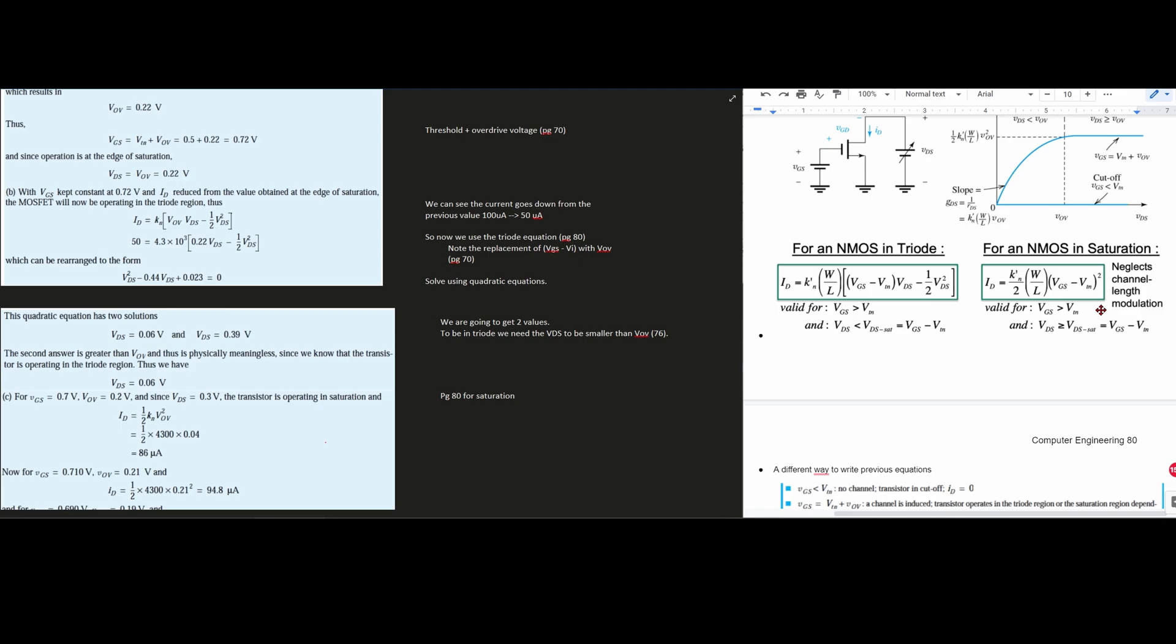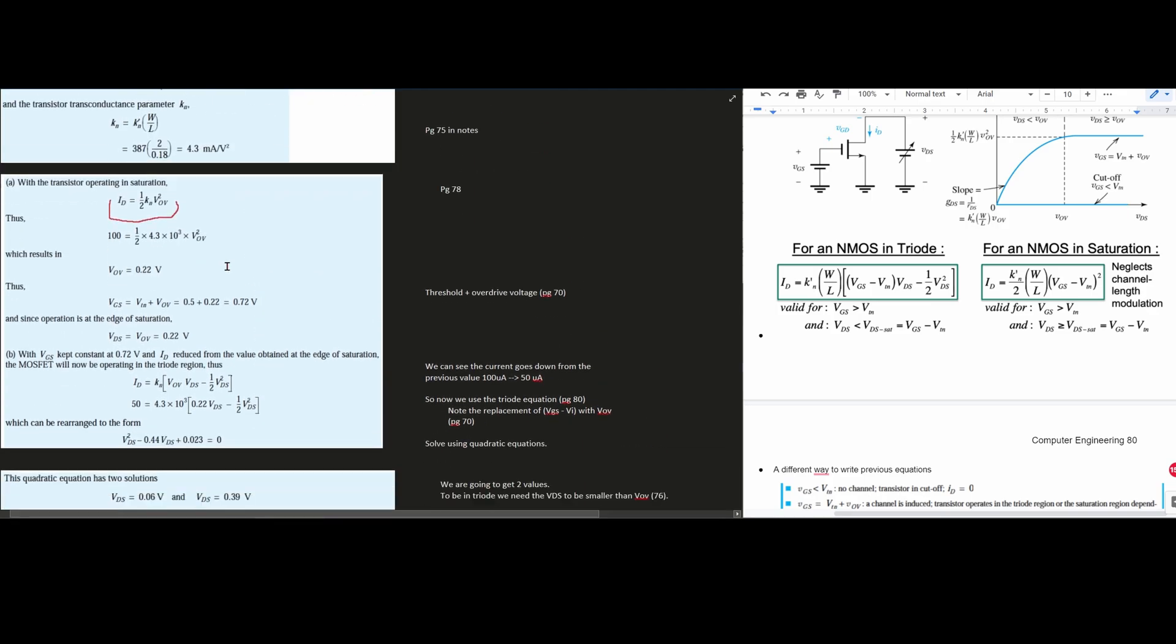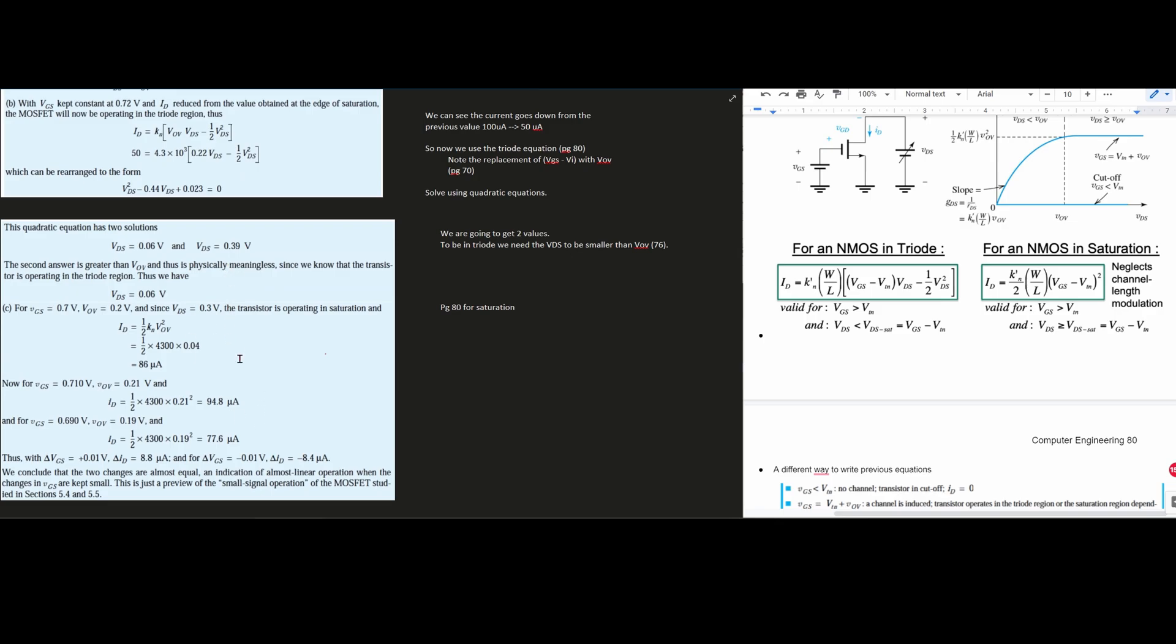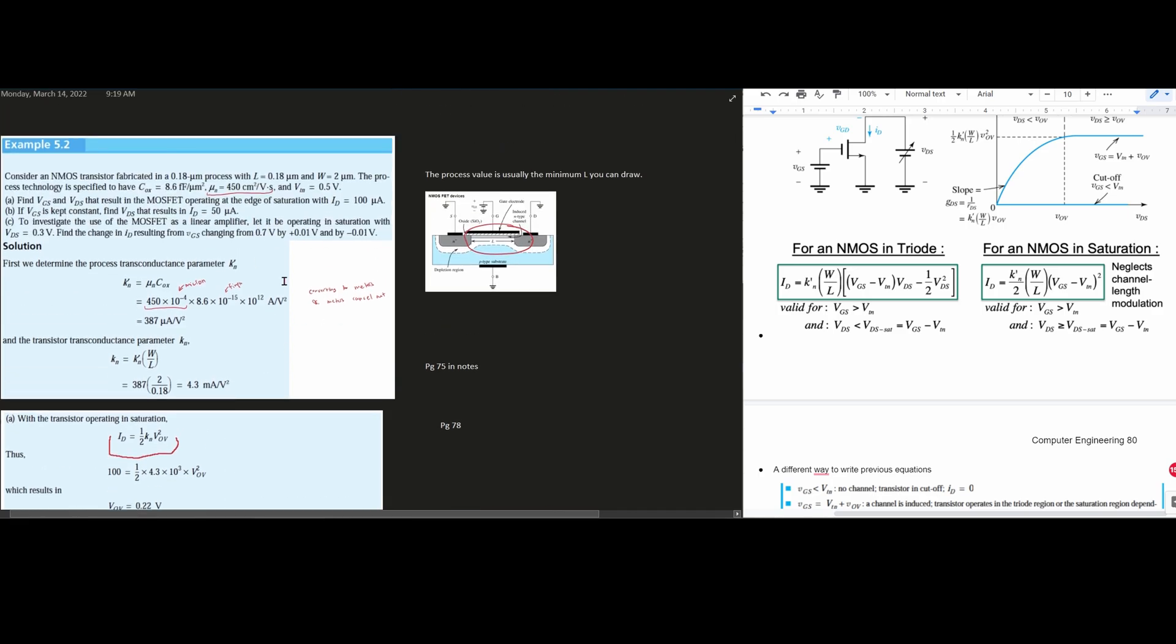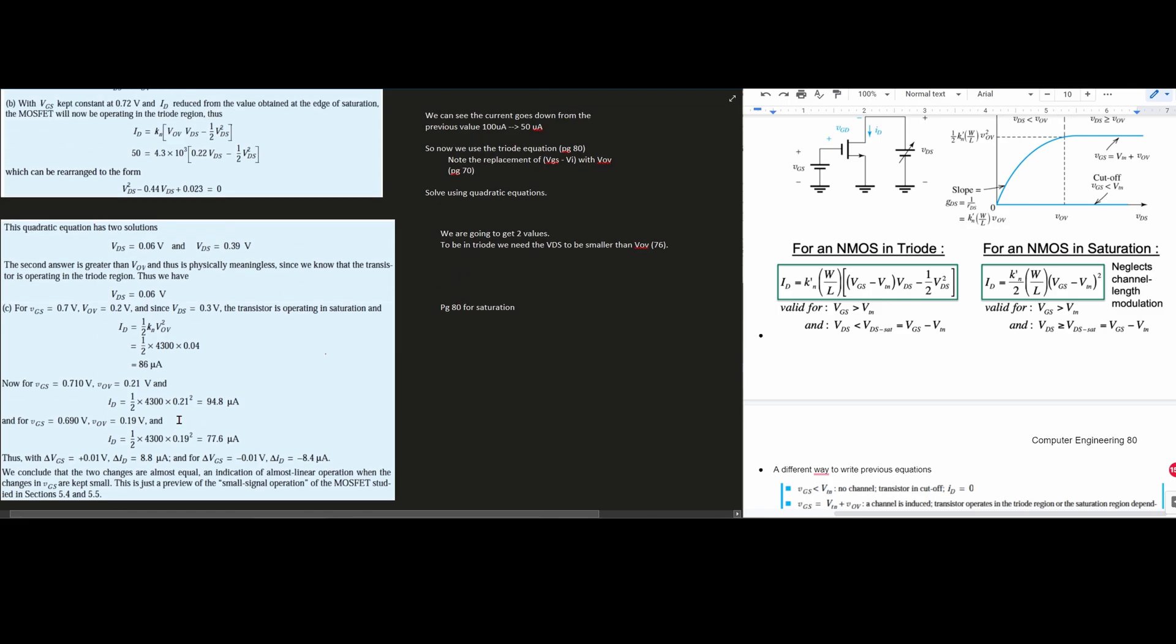If we scroll back down here, we have our saturation equation. ID is equal to, we're going to use KN, not K' N. So we have one half times our KN times our VOV, if we substitute it like we've done previously, squared. And so let's plug in our values. We have this 4,300 and that's our 4.3 times 10 to the 3rd. That's for the milli times our 0.04 because that is VOV squared. And that's going to give us 86 microamps. So now is where we want to solve for the plus minus of the voltage for the changing of our 0.7 volts. So scrolling back down here, we know plus minus 0.01 is going to give us a VGS of, if we go off 0.7, 0.71 volts. And for the lower one, 0.69 volts. And for our VOV, if we change this, it's going to be 0.21 volts and 0.19 volts. And all we're going to do is plug in, we're going to use the same equation previously. So we're just going to plug in the VOV. And that's going to give us these two values.